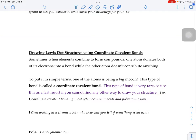To put it in simple terms, one of the atoms is being a big mooch. This type of bond is called a coordinate covalent bond. I do want to emphasize that it's really rare, so use this as a last resort if you can't think of any other way to draw your structure.